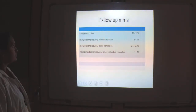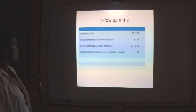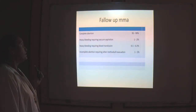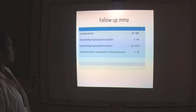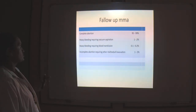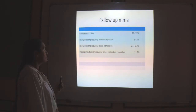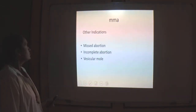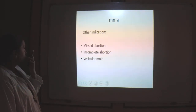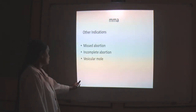In follow-up of the medical method of abortion: complete abortion will occur in 95 to 99%. Heavy bleeding occurs in only 1 to 2%. Heavy bleeding requiring blood transfusion will be 0.1 to 0.2%, which is very low. Incomplete abortion requiring other methods occurs in 1 to 2%. Other indications for the medical method of abortion include missed abortion, incomplete abortion, and blighted ovum.